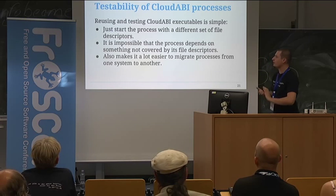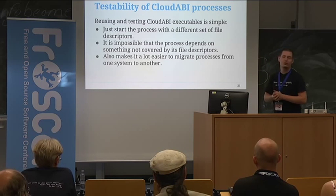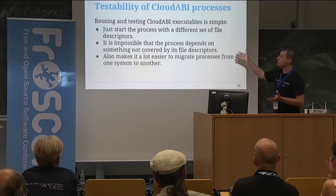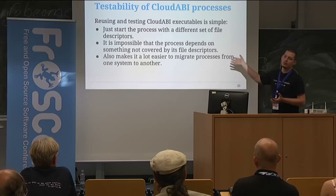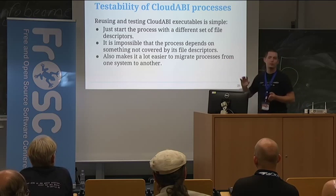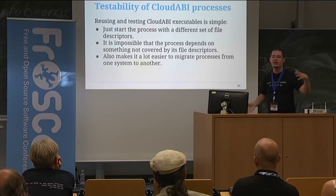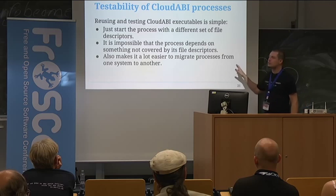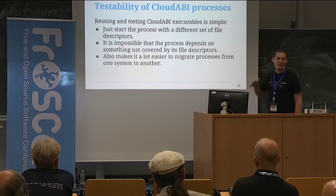Testability of Cloud ABI processes: in a model where all outside functionality is determined by file descriptors, it becomes really easy to test software. You can start up your executable with a different set of file descriptors. If you don't want a process to talk to the production database, you can just provide a file descriptor to a fake dummy testing database server that only returns data used for testing. It's incredibly easy to test Cloud ABI processes — in fact, in my opinion it's even impossible to write software that's not testable.